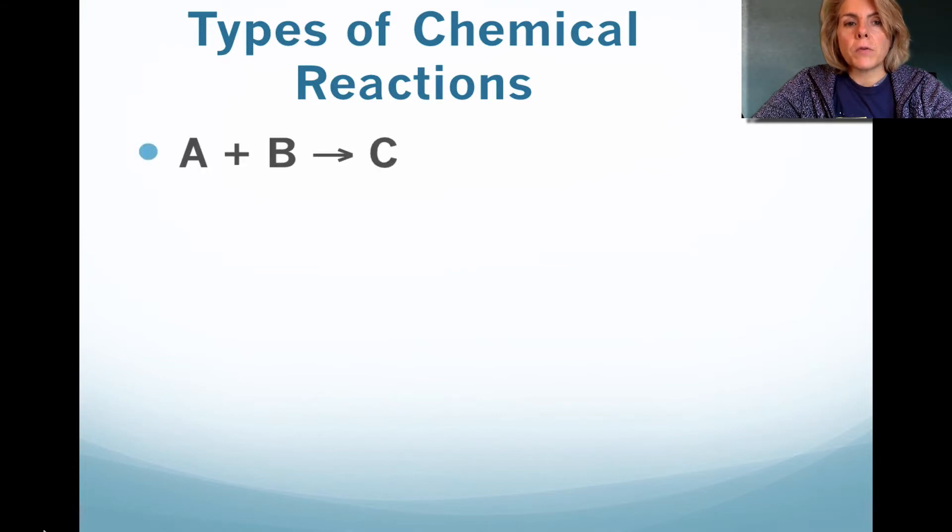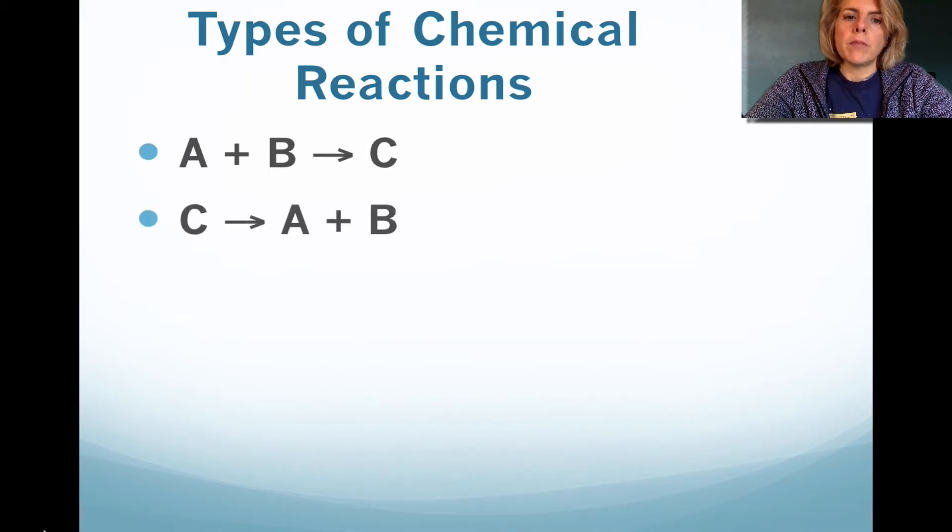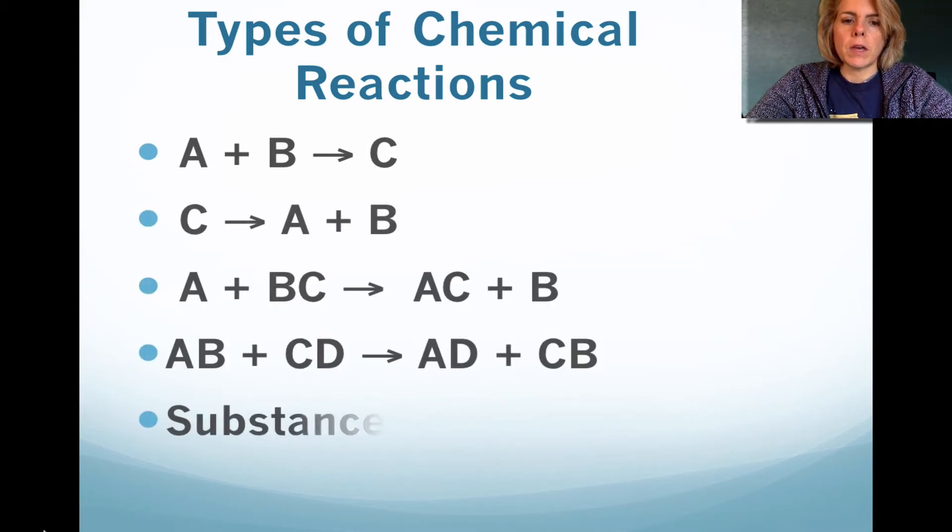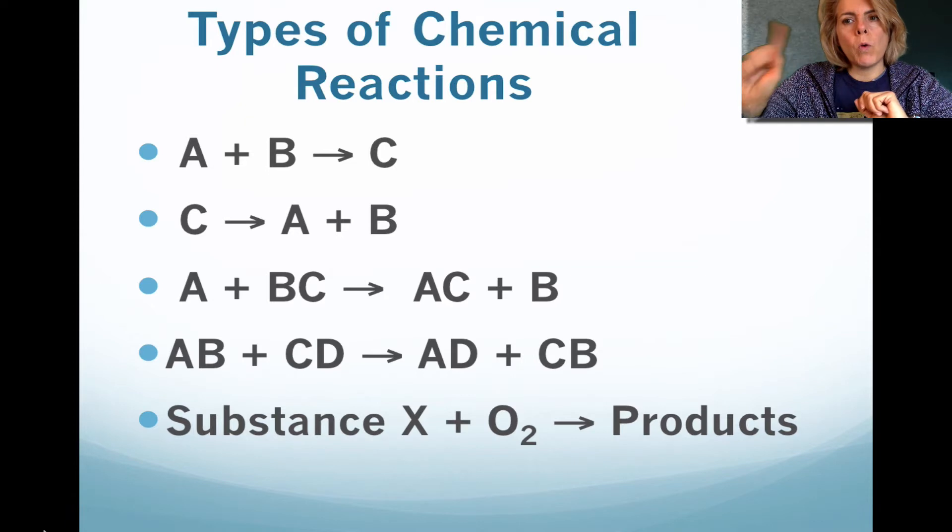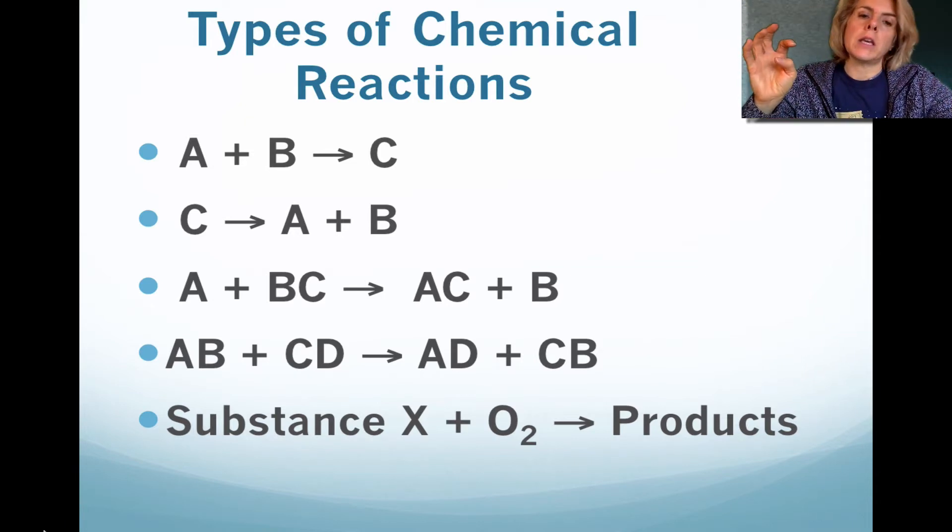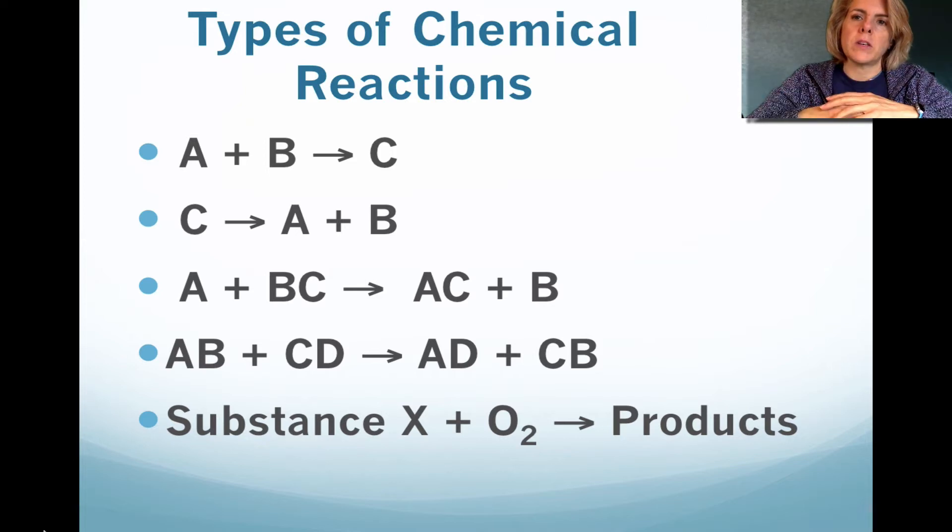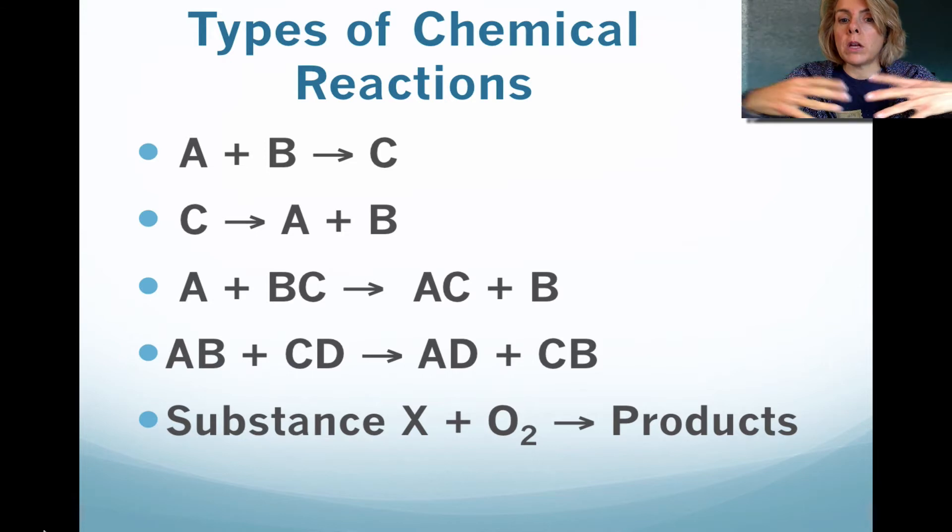So types of chemical reactions. If we were to represent each letter by a compound, we have many different types of chemical reactions. We could have two reactants forming one product, or we could have one reactant forming two products, or we could have sort of like a dance where partners exchange partners, and we could also have combustion, where we have a reactant combined with oxygen to create products.